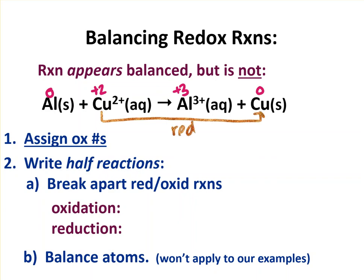And if I'm careful about that, then I automatically know the other one, but we should check. Aluminum is going from zero to plus three. That is oxidation. Its oxidation number is going up. It's losing electrons to do that.